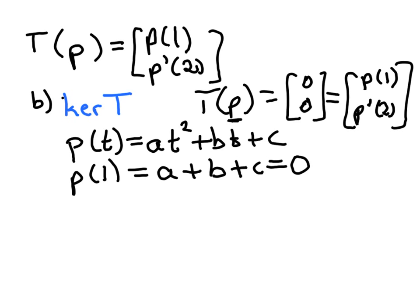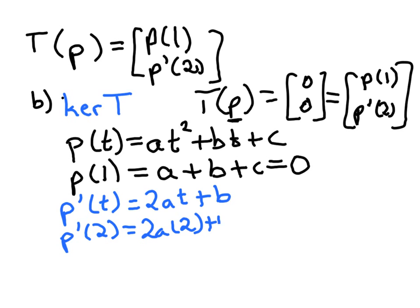Also, we want p'(2) to equal 0. So first of all, p'(t) would be 2at+b (the derivative of t is 1, and the derivative of the constant c is 0). So this is p'(t).